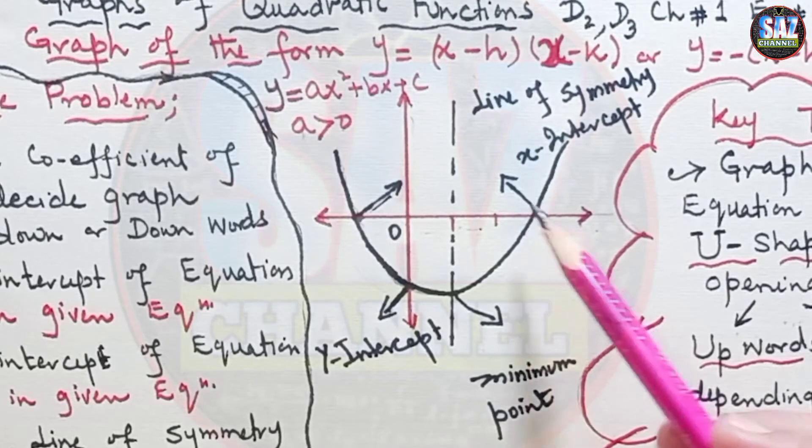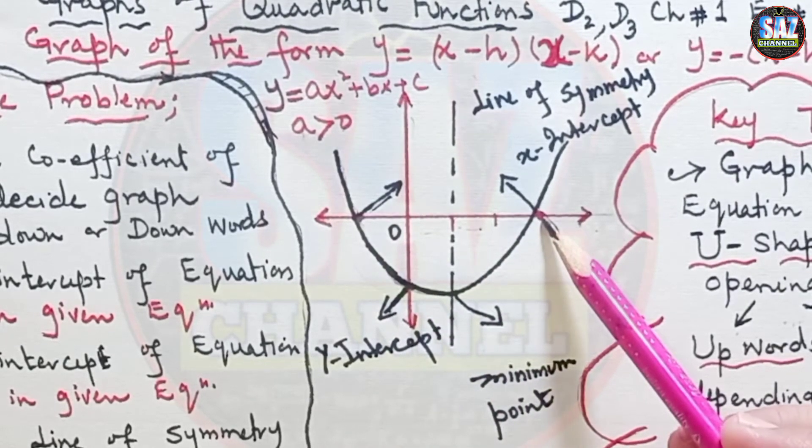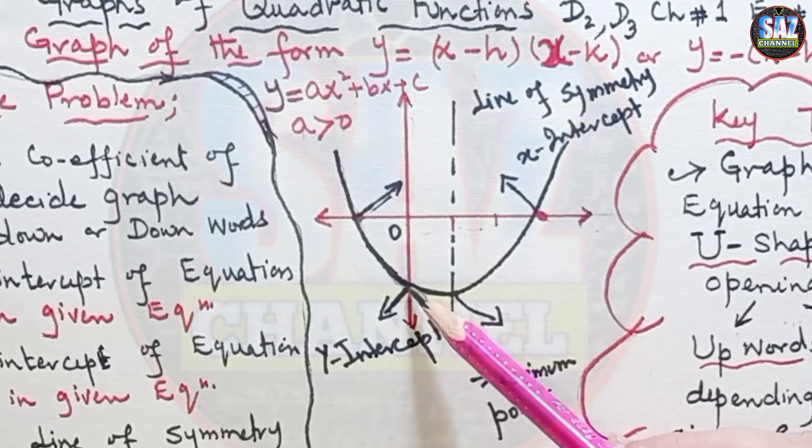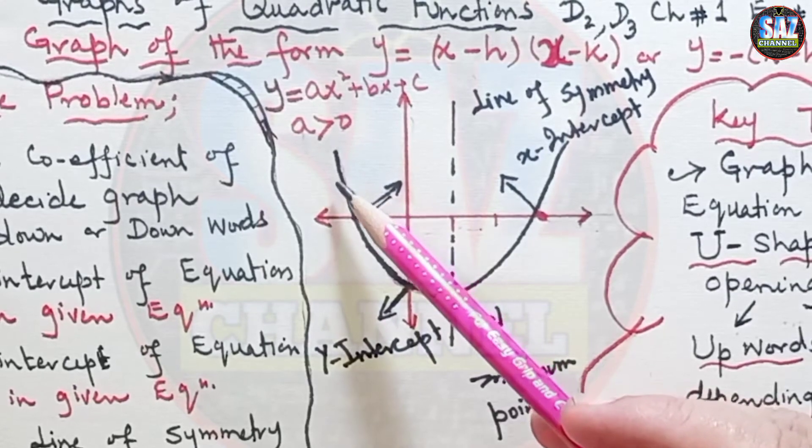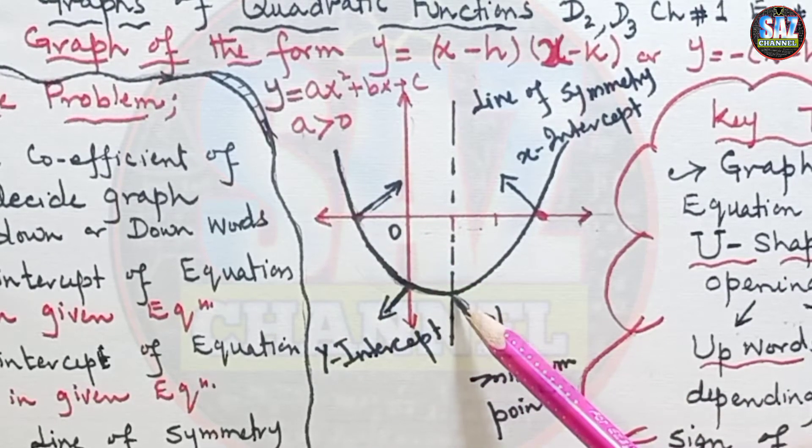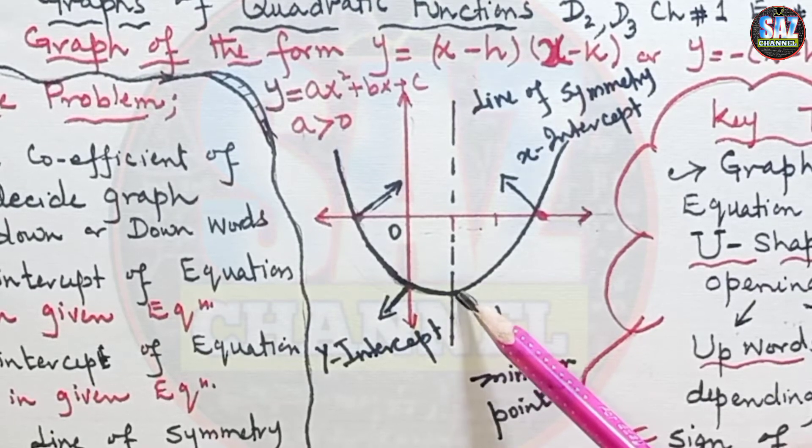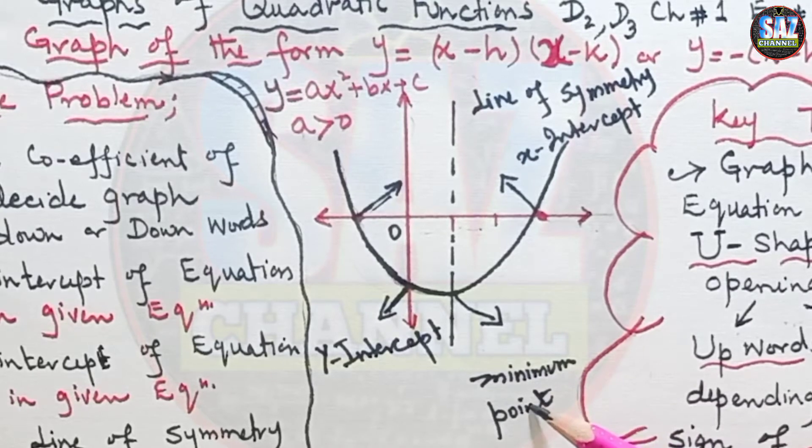Now observe, the curve is cutting at two points on x-axis and they're called the x-intercepts, and the curve is meeting and cutting y-axis. It's called the y-intercept. And then the curve is coming downward and it's taking the minimum value and then it again starts rising up. So it requires a minimum point as well.